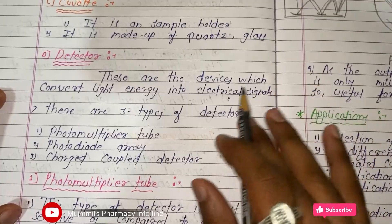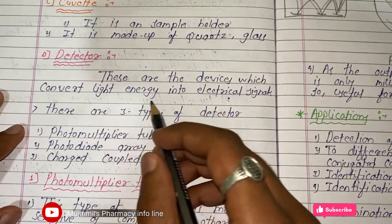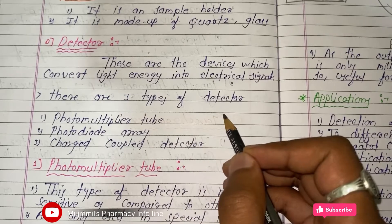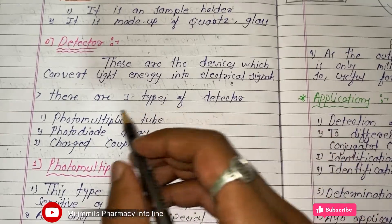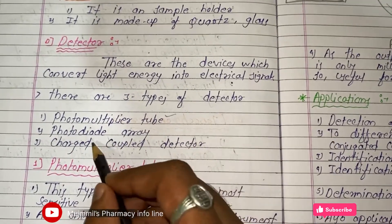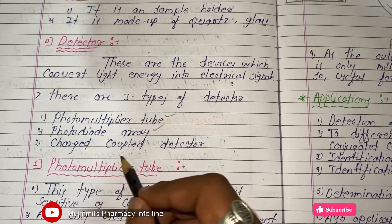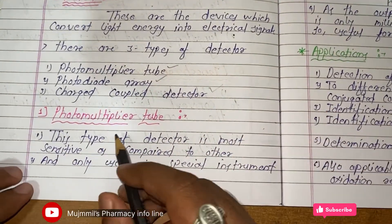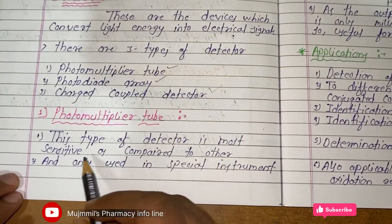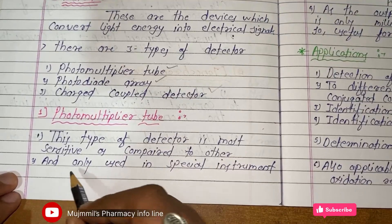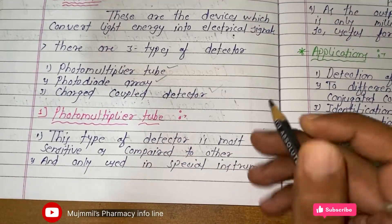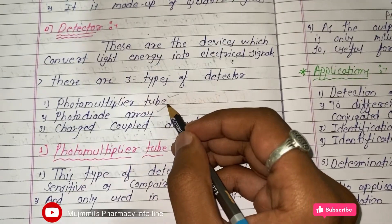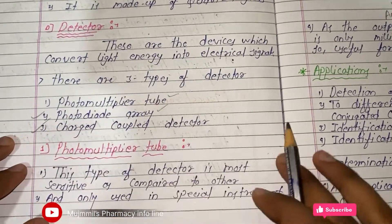Detectors are devices which convert light energy into electrical signals. There are three types of detectors: the photomultiplier tube, the photodiode array, and the charge-coupled detector. The photomultiplier tube is the most sensitive of the three and is used in specialized instruments like UV-Visible spectrophotometers.